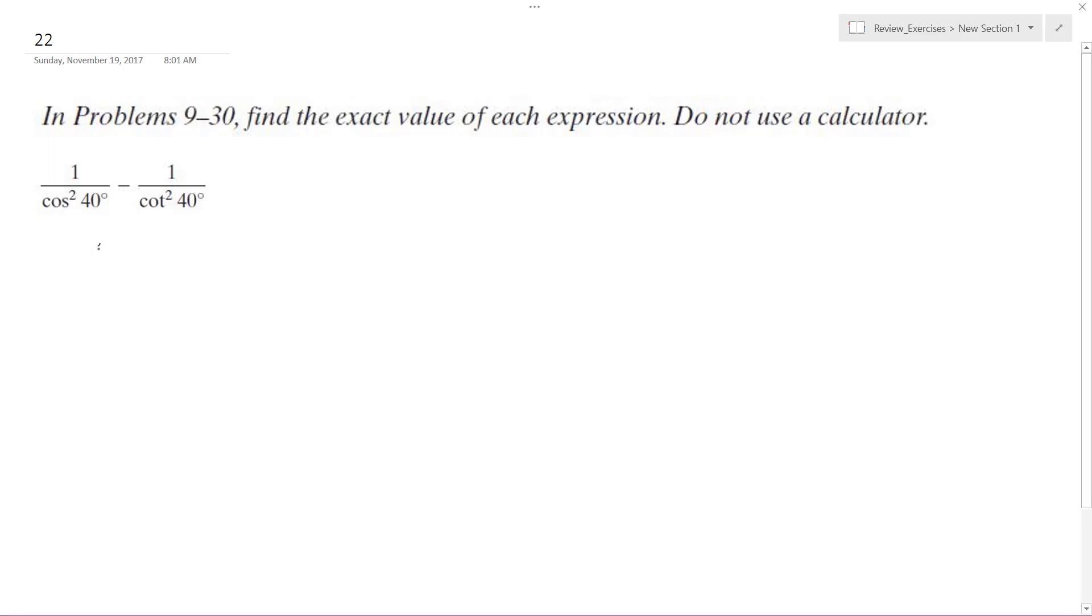All right, so solving this. Well, rewriting this cotangent is cosine squared 40 over sine squared 40, and the sine goes up on top.